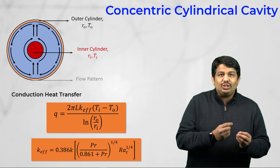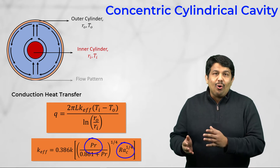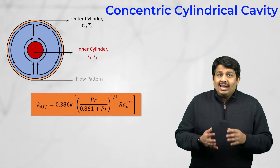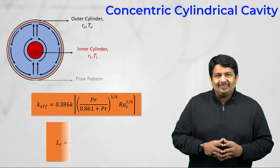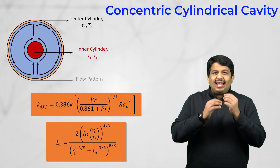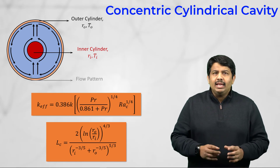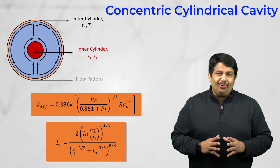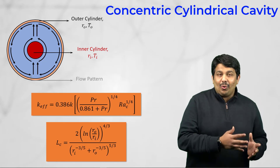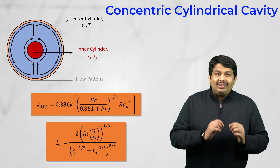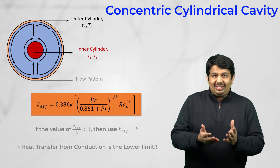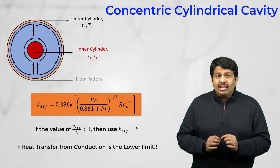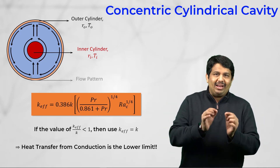The following correlation for the effective thermal conductivity depends on the fluid Prandtl number and the flow Rayleigh number based on an effective length scale LC, which is given by a specific equation. It is important to understand that the effective thermal conductivity relationship is valid only if K_effective is larger than the thermal conductivity of the fluid. When K_effective over K is less than 1, the fluid thermal conductivity should directly be used in the analysis, ensuring that the heat transfer rate with natural convection is not lower than the limit imposed by fluid conduction.